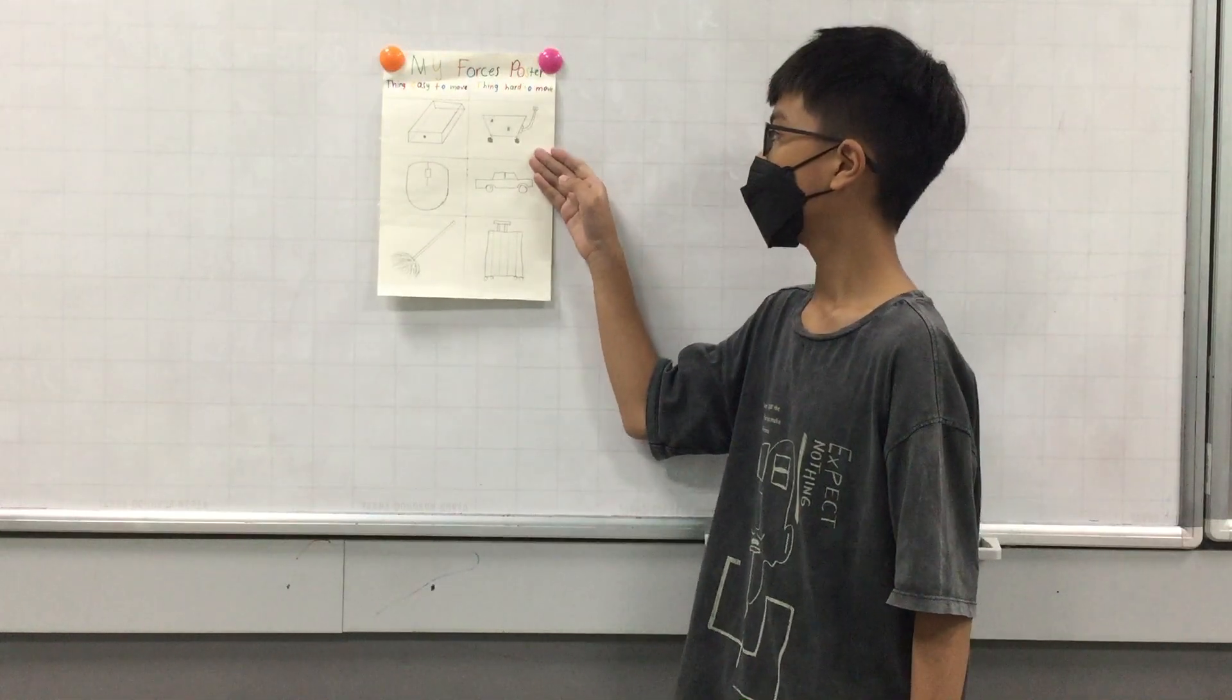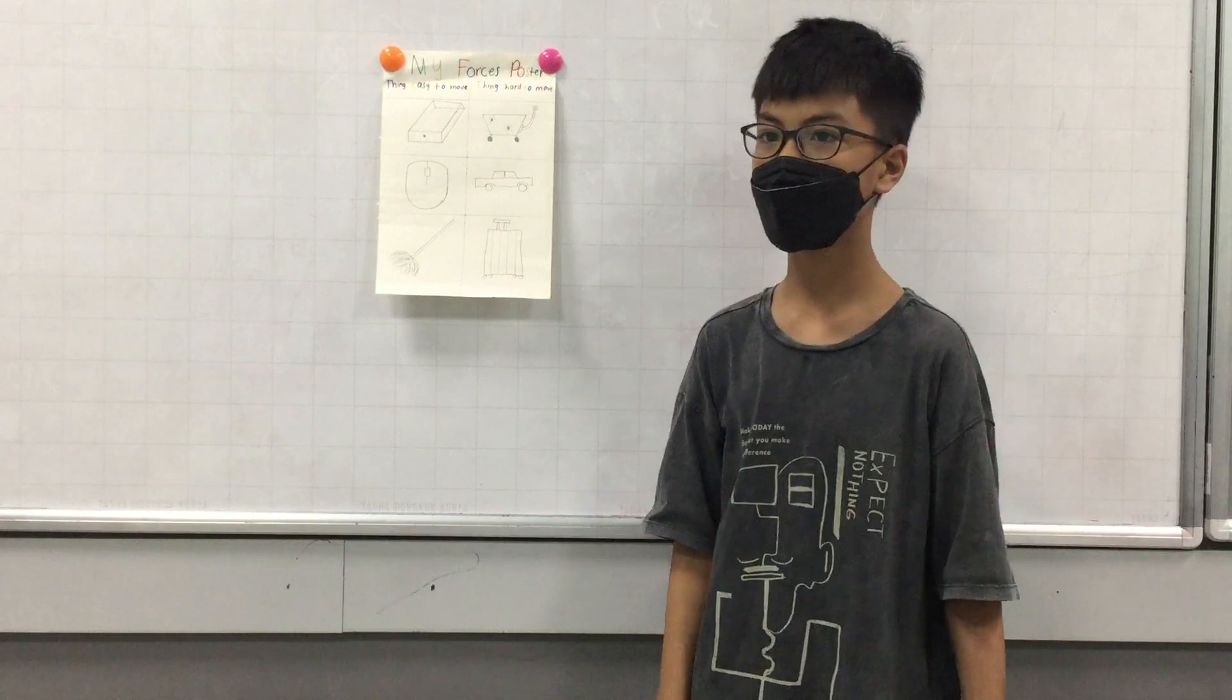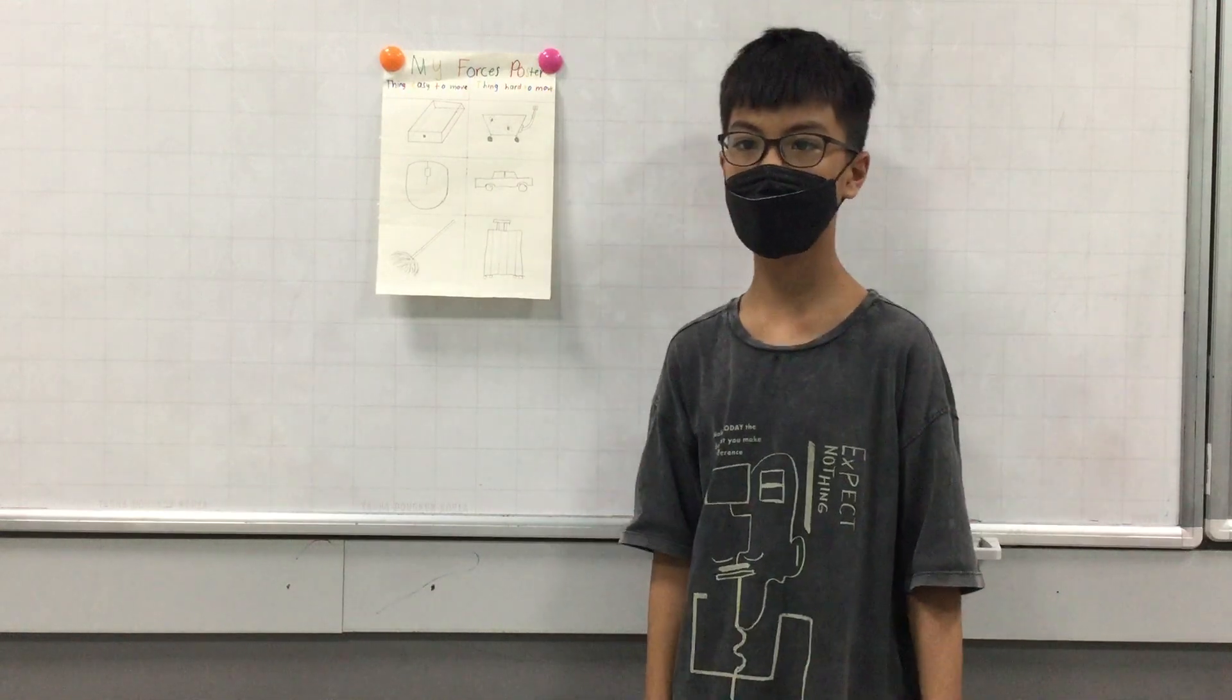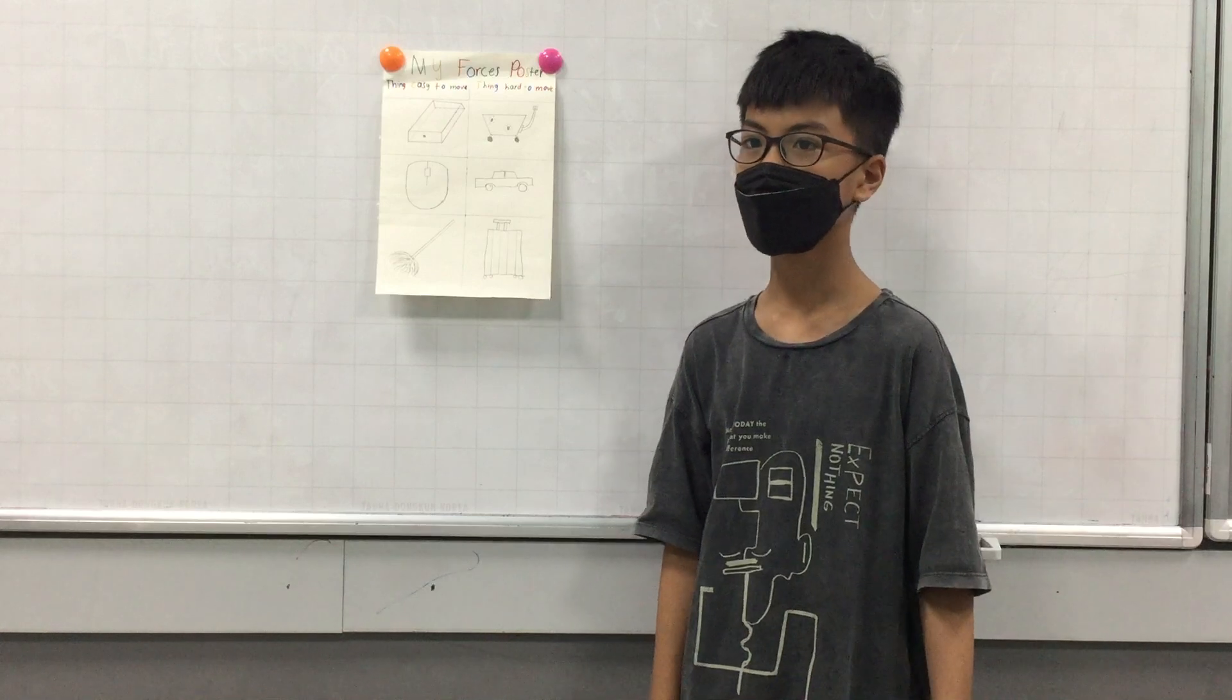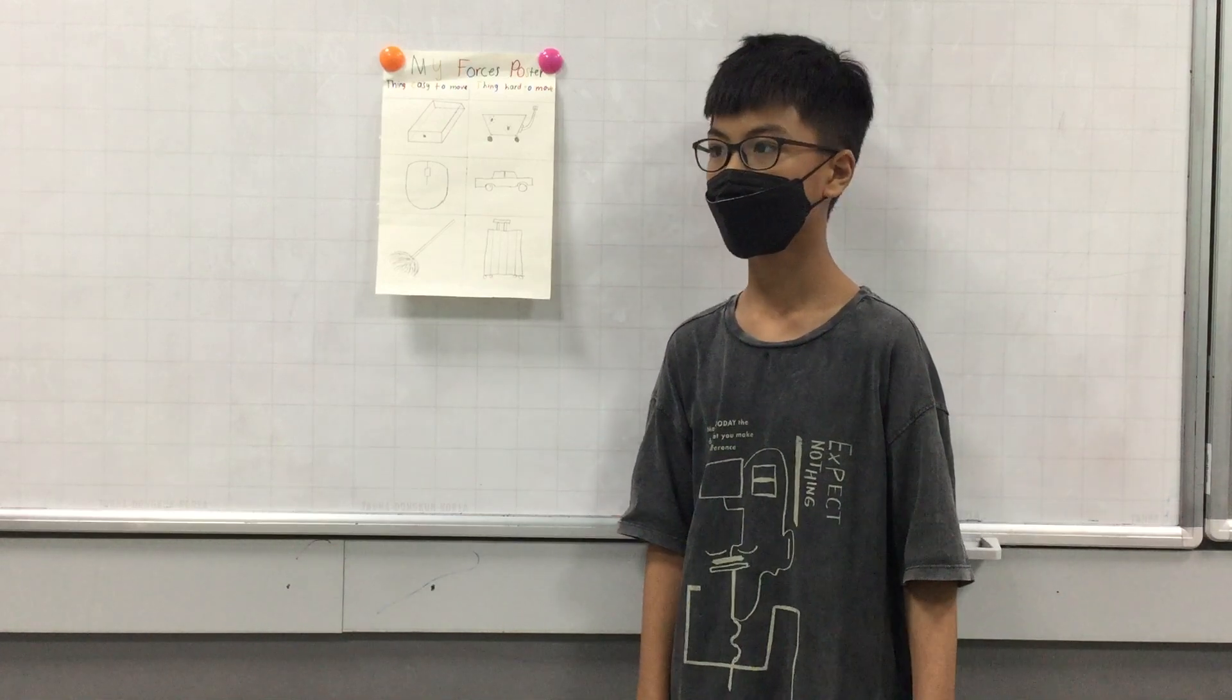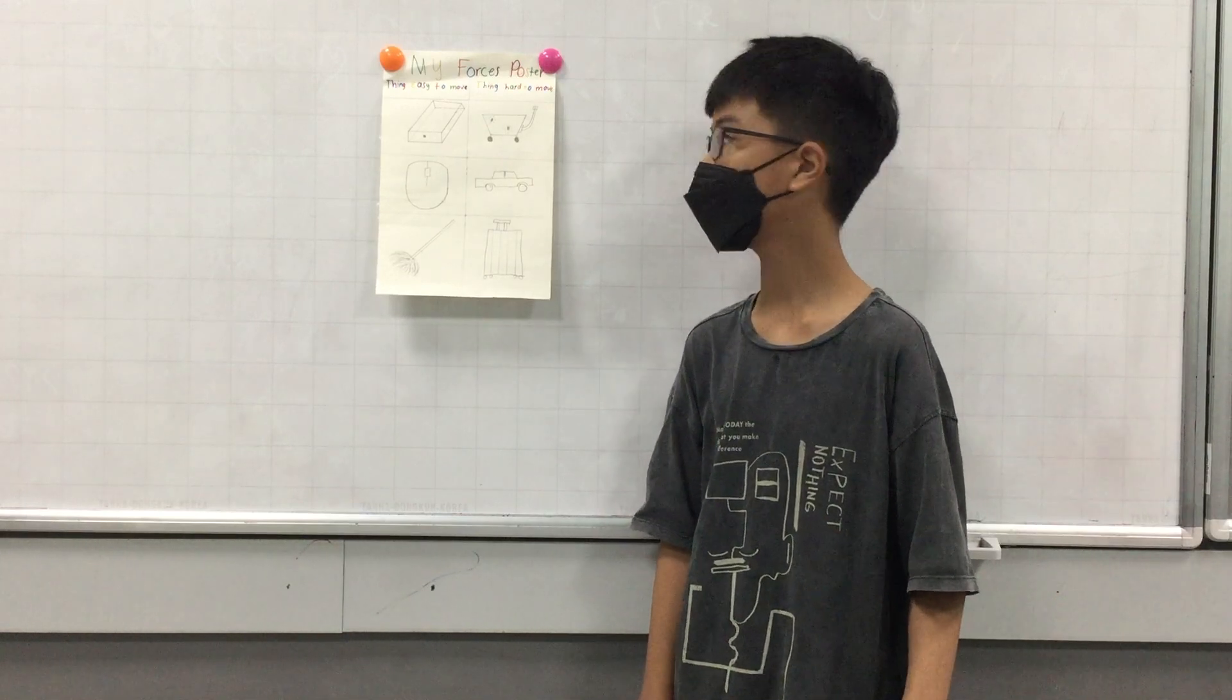First thing that's hard to move is a full wagon. It's hard to move because it's heavy. So we need a big force. First, we use a wagon to transport things in it like snow, our friend, our dog.